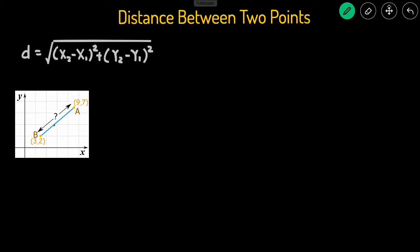Let's apply that to this problem. We're given two points, and we want to find the distance between point A and point B. It doesn't really matter what you call 1 or 2. We can just call A point 2. So we can say this is x2, y2. And then this is going to be x1, y1. And then now we can just plug it into the equation.